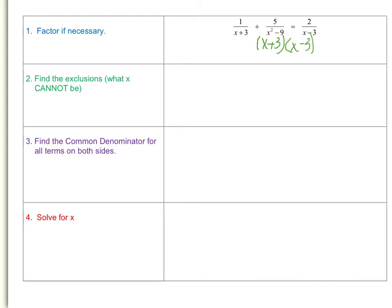Now we need to find the exclusions. What are the exclusions? This is what x cannot be. Why do we need to find out what x cannot be? We're dealing with fractions, and fractions have denominators. Denominators can never equal 0, so we have to find which values of x would cause our denominator to equal 0.